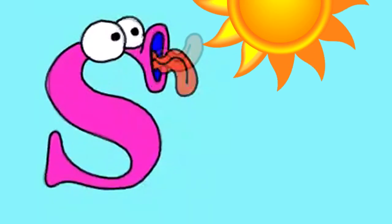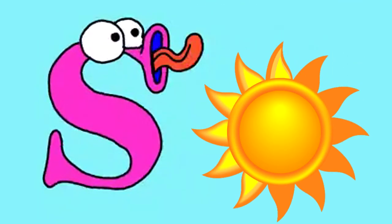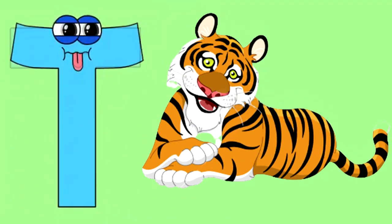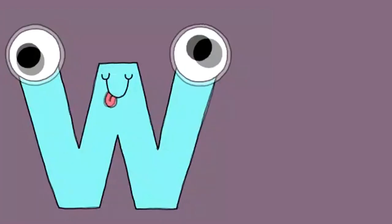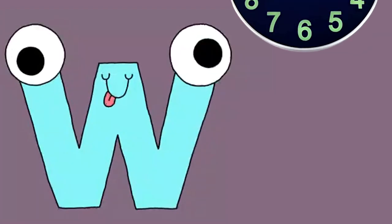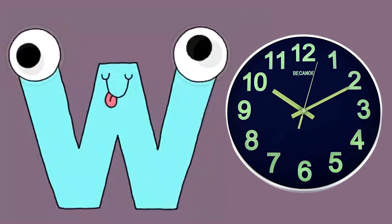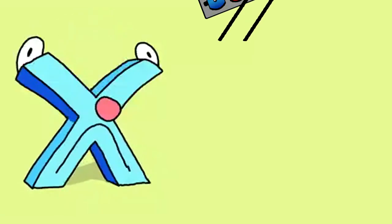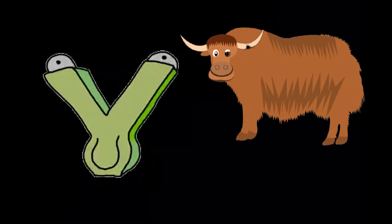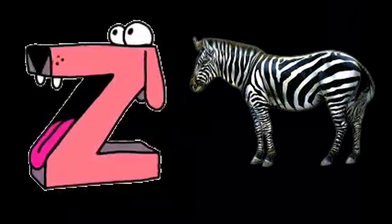S for Sun, T for Tiger, U for Umbrella, V for Violin, W for Watch, X for Xylophone, Y for Yak, and Z for Zebra.